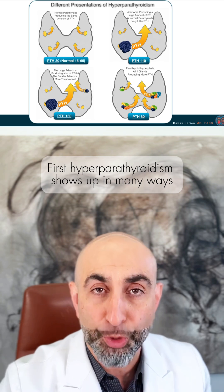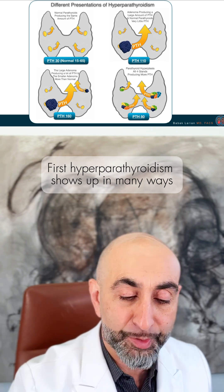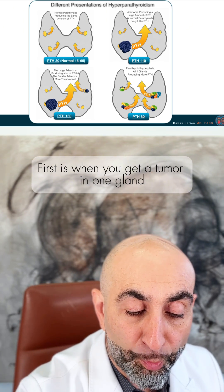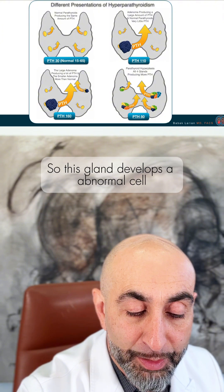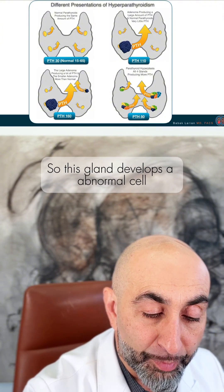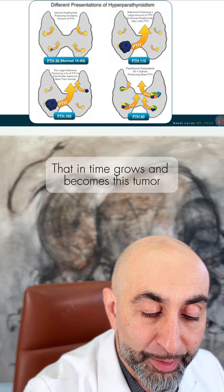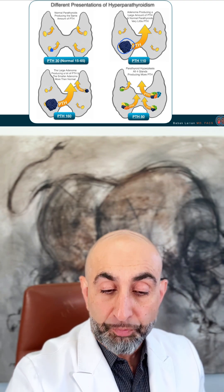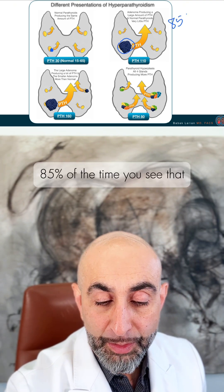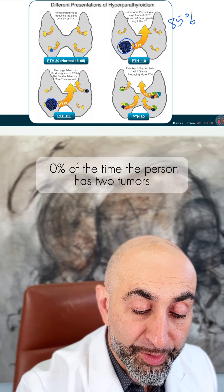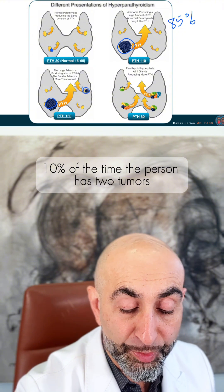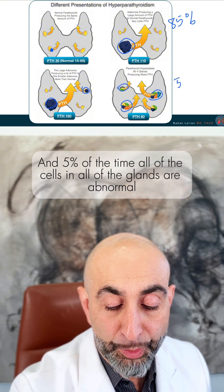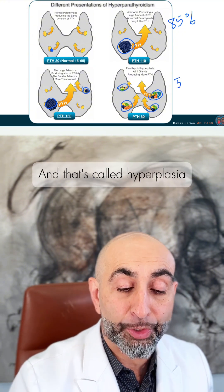Hyperparathyroidism shows up in many ways. First is when you get a tumor in one gland — this gland develops an abnormal cell that in time grows and becomes a tumor. 85% of the time, you see that. 10% of the time, the person has two tumors. And 5% of the time, all of the cells in all of the glands are abnormal, and that's called hyperplasia.